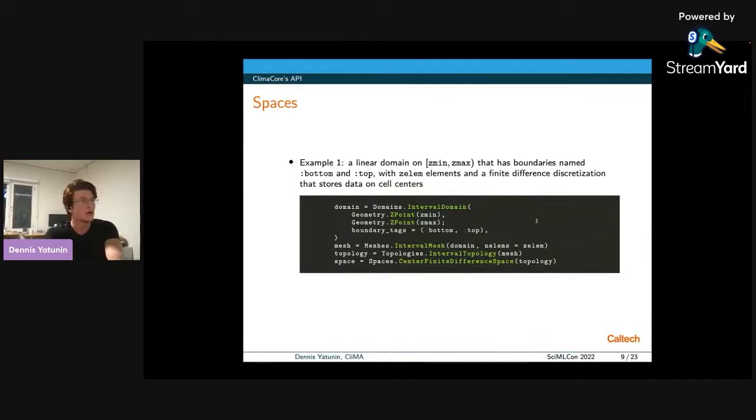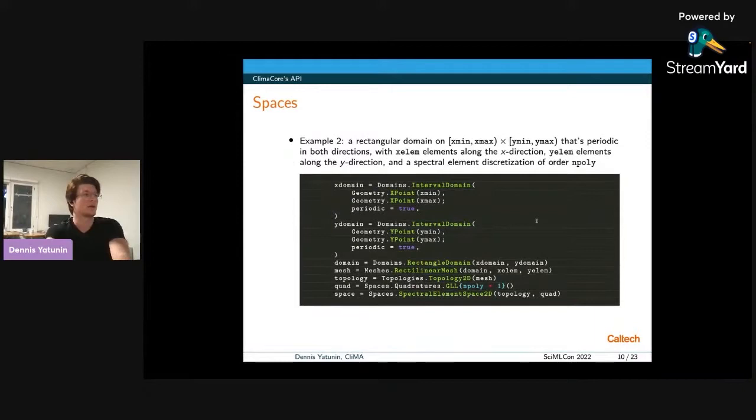Here's the simplest example of a discretized domain. Suppose we want a 1D domain that goes from Z equals Z min to Z equals Z max, and it's non-periodic, so it has a bottom and a top boundary, and Z elements. And so this is how we would specify that. First, we get the domain, then the mesh, then the topology, and finally, the space. Here's a bit more complex example. So now we want a rectangular two-dimensional domain with a spectral element discretization with polynomial order n poly. And this time, the domain is periodic in both directions, so we can specify periodic equals true rather than assigning boundary names. And this is what the code for that would look like.